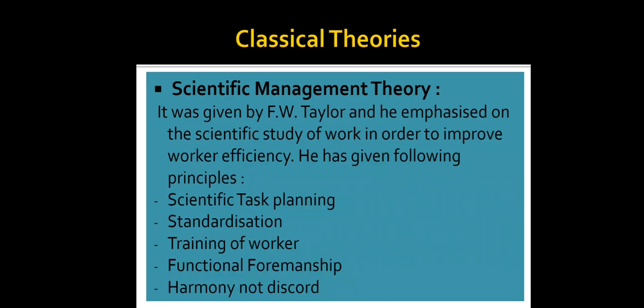The first theory under classical theory is scientific management theory, given by F.W. Taylor. He emphasized the scientific study of work in order to improve worker efficiency — work should be scientifically studied if we want to improve the efficiency of workers. He gave us some principles: scientific task planning, standardization, training of workers, functional foremanship, and harmony not discord. Harmony not discord means that harmony between management and workers is very important in the organization.